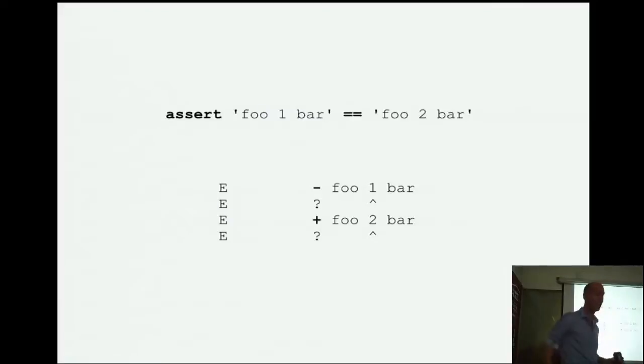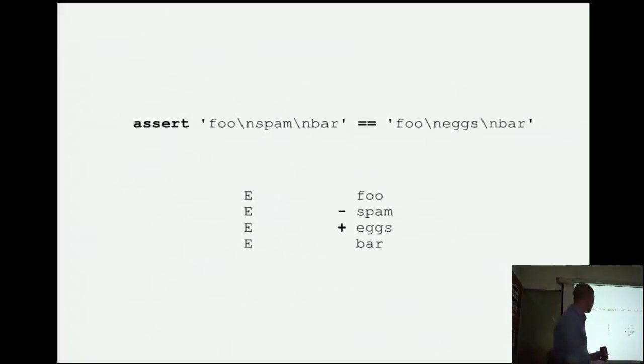Of course, for string equality, it tries to be even more helpful. And if the strings are almost the same but a little bit different, you don't have to go figure out why. It puts a little carrot. It shows you exactly where they're different. That works for multi-line strings, too, out of the box. So, if you've got, you know, food spam bar and food eggs bar, they'll tell you, right, well, they're both in food bar, but there's the diff of what was different between those two.